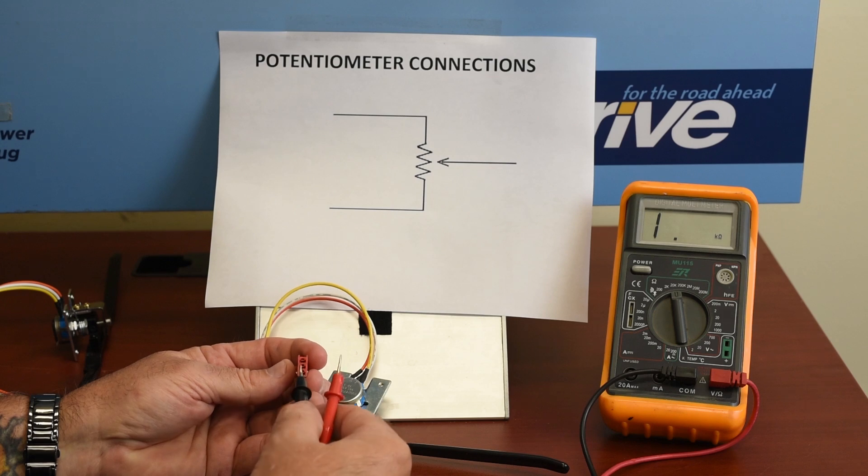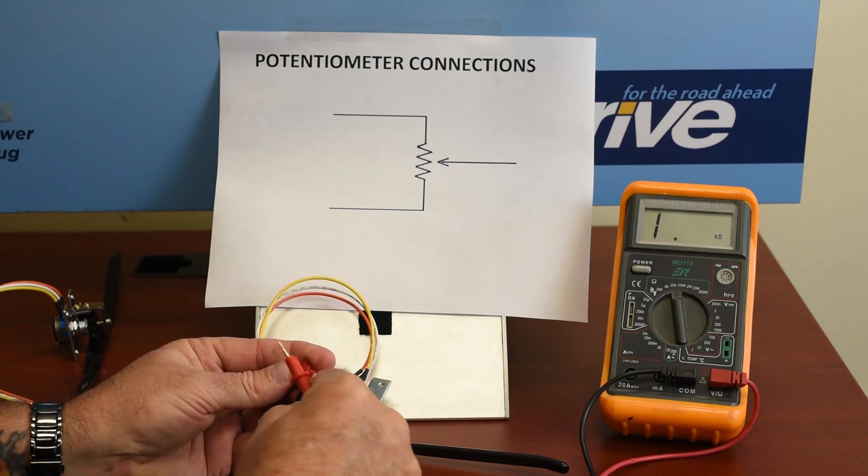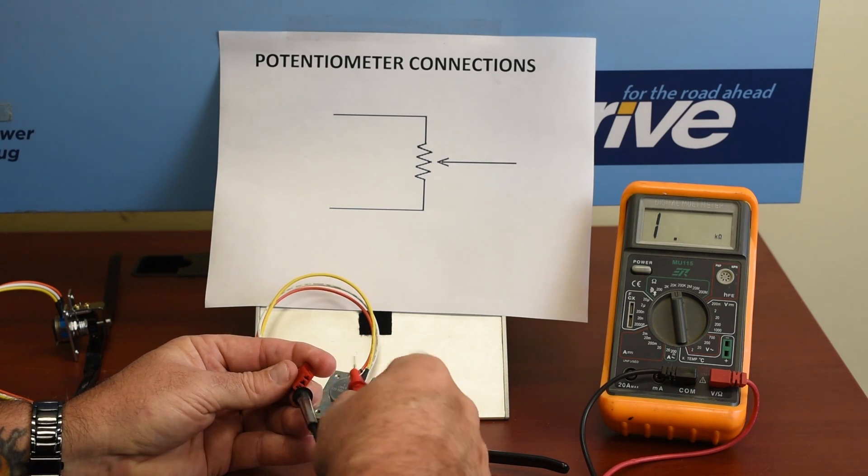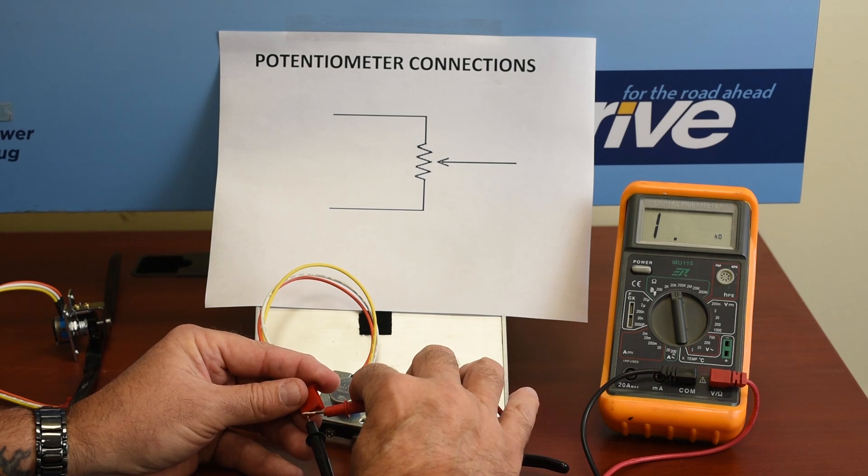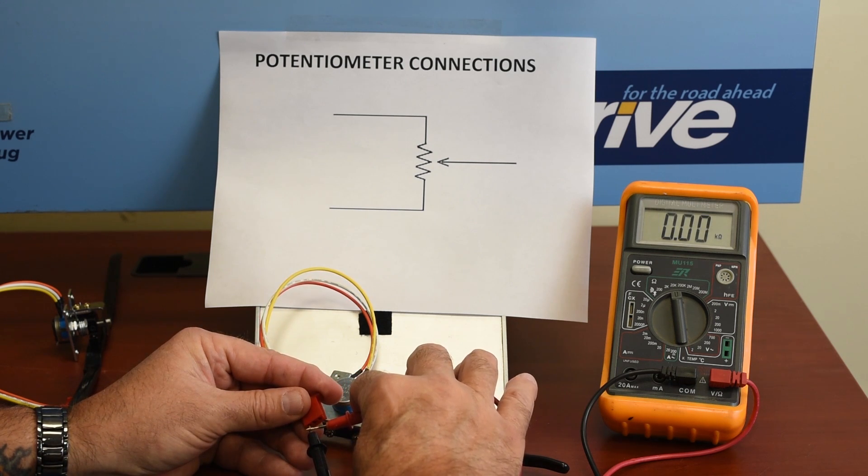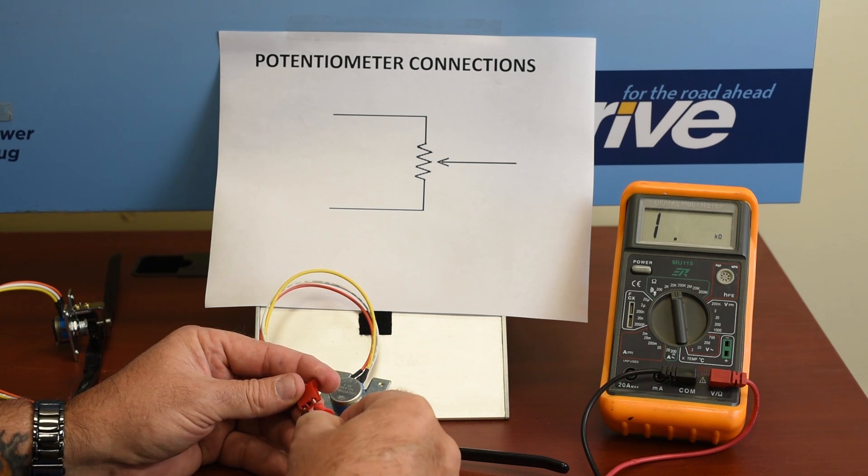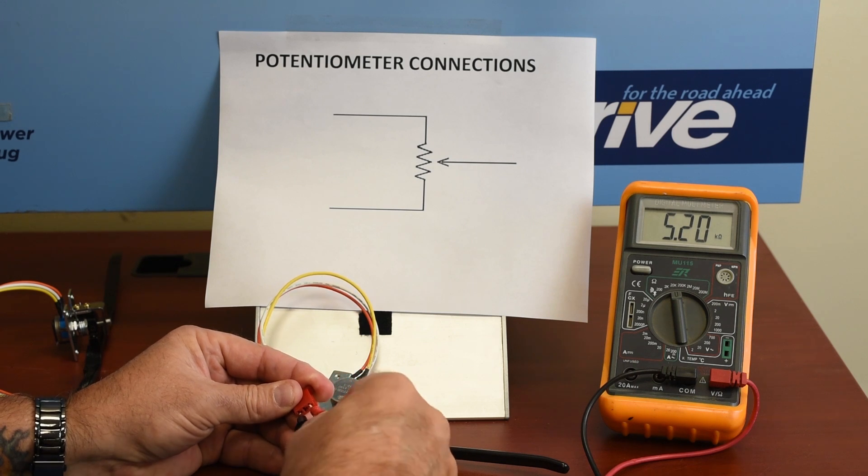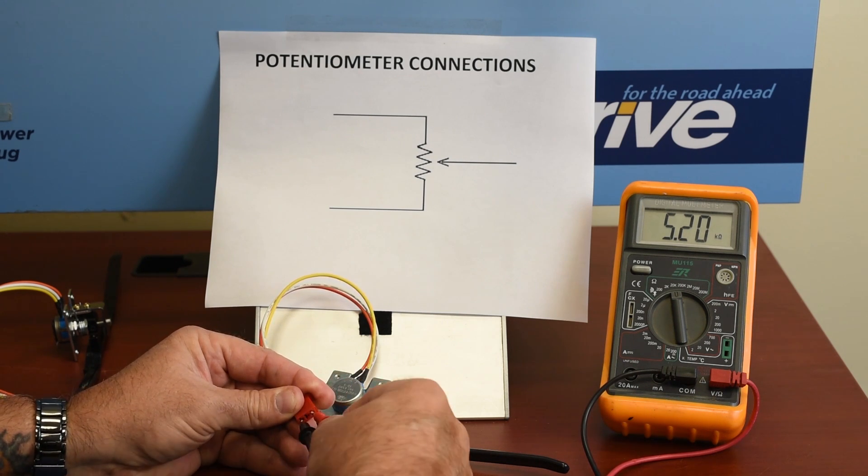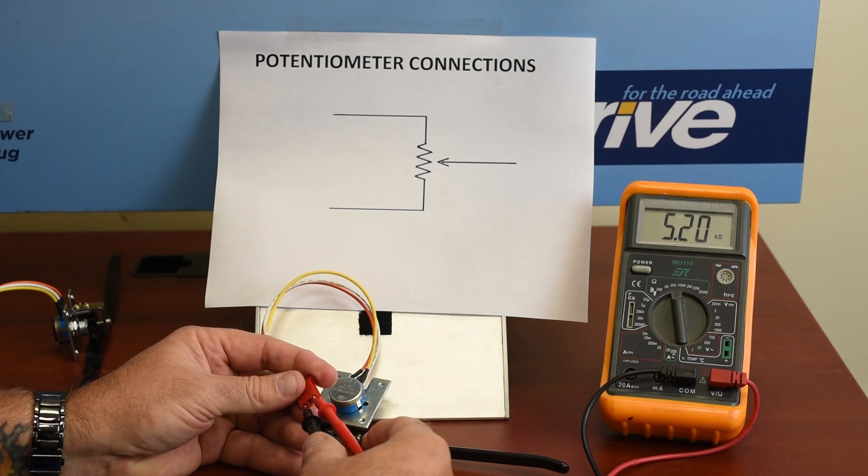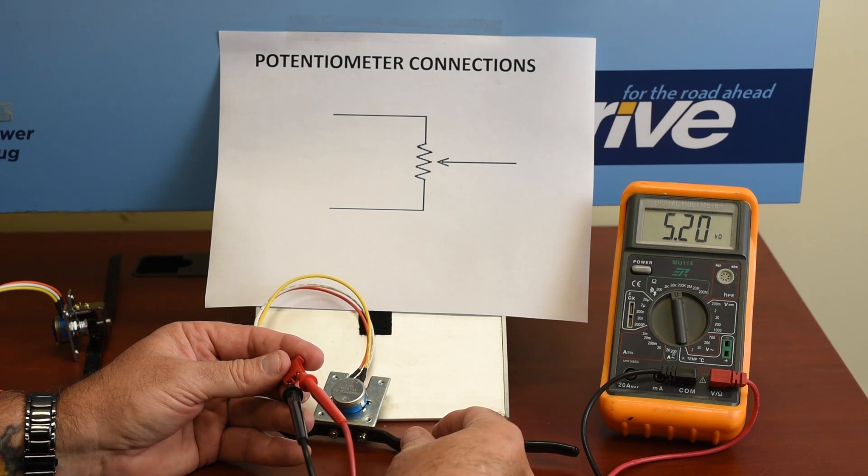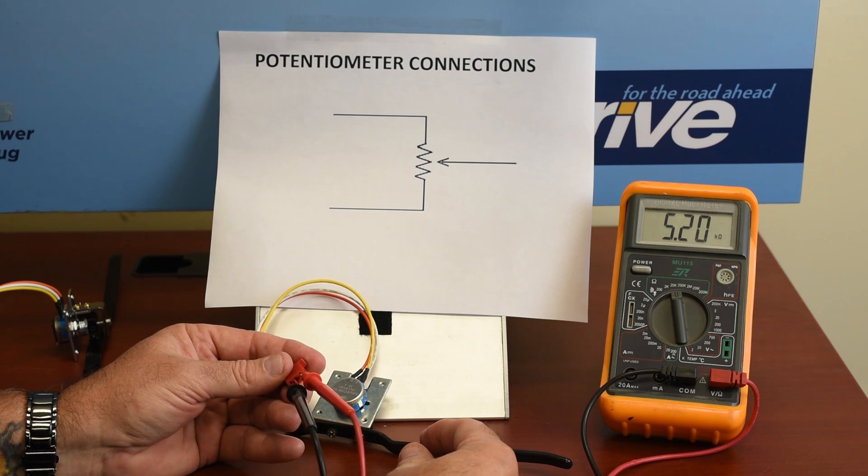Now, the first thing we measure is outside to outside. First, we touch the leads together to make sure that the gauge is working. Just make that a practice, because sometimes you can waste a lot of time if something is on the wrong scale. All right, here we have 5.2K outside to outside.